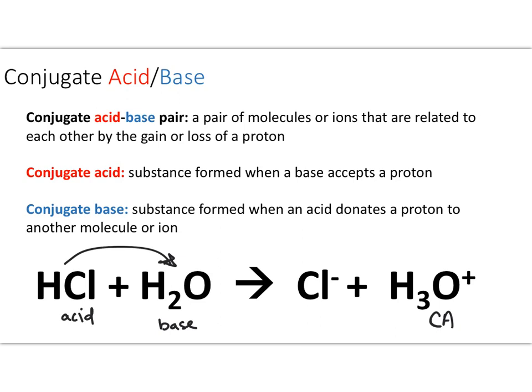Now, our conjugate base is going to basically be the leftovers after the acid gives away its proton. In this particular case, HCl only has a single proton to give away because it's a monoprotic acid. So the remainder is going to be the chloride ion. So if we go ahead and we look over on this right-hand side, the leftover is that chloride ion, and it is therefore our conjugate base. So this is how we identify our conjugate acid and base.